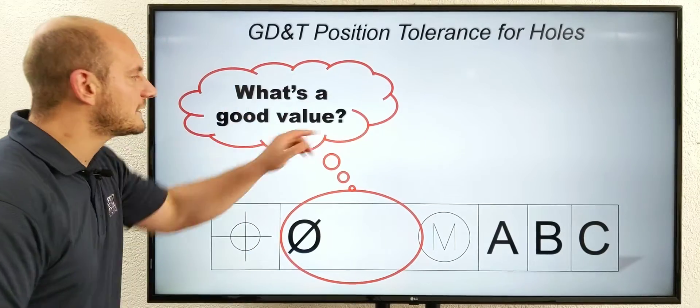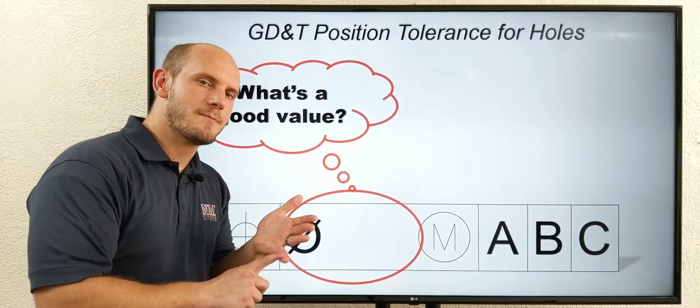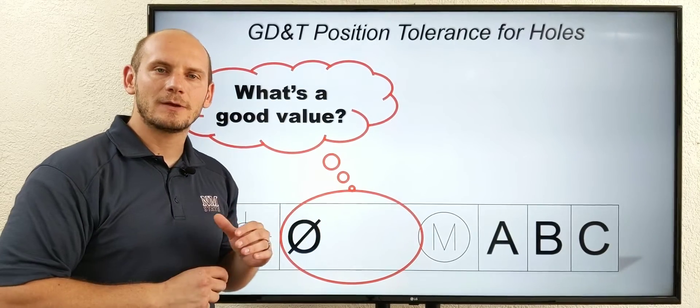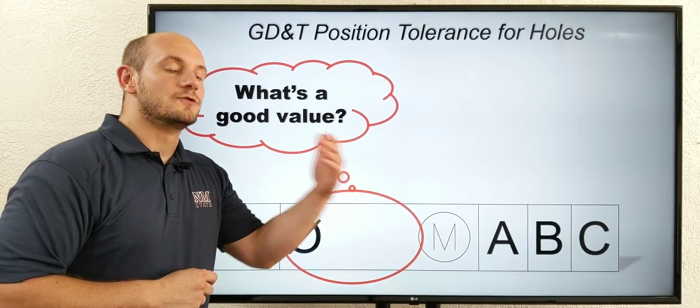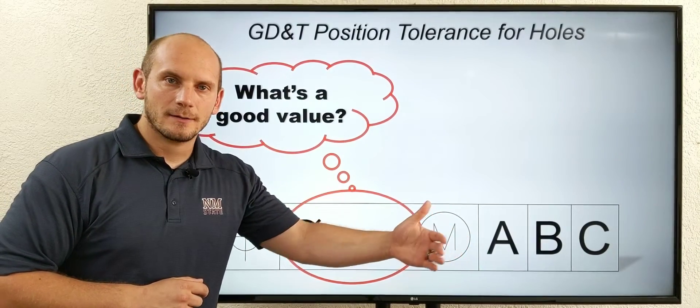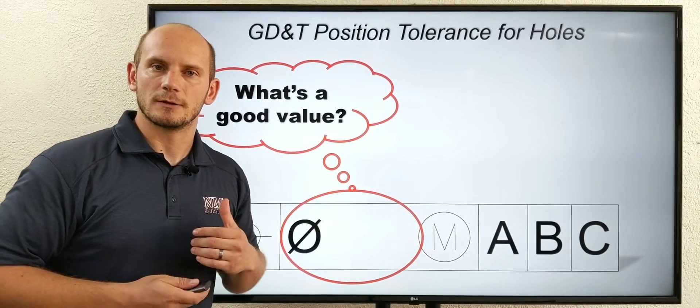However, before we answer this question, it's critical we first understand the shape and size of the tolerance zones in our two types of drawings. The two types being the traditional plus or minus type and the GD&T positional type, which is what we're trying to learn.